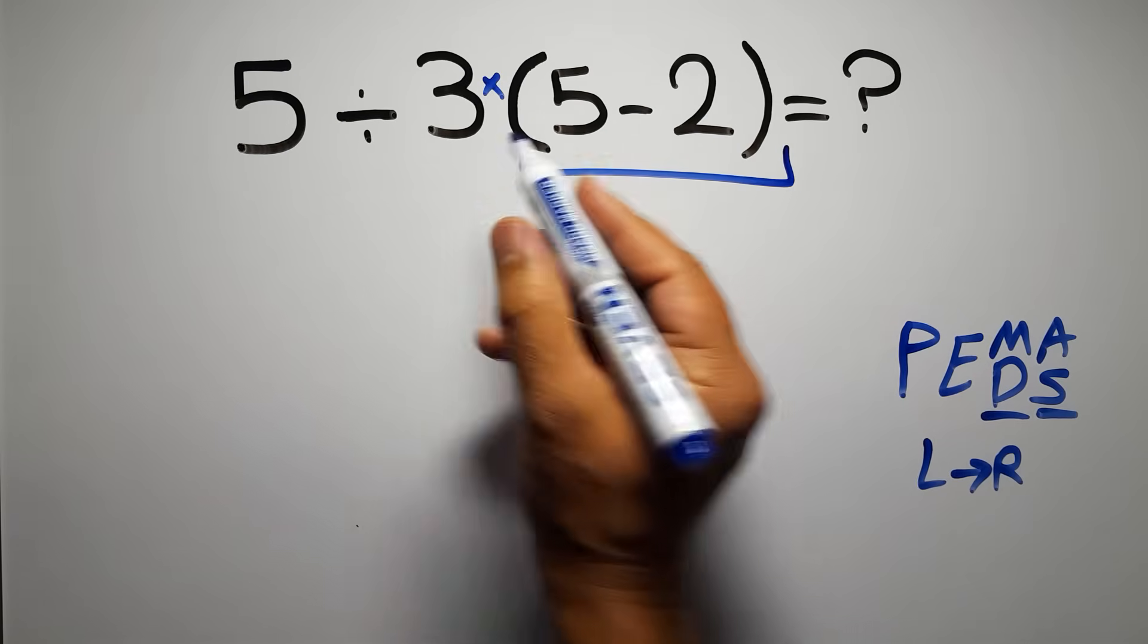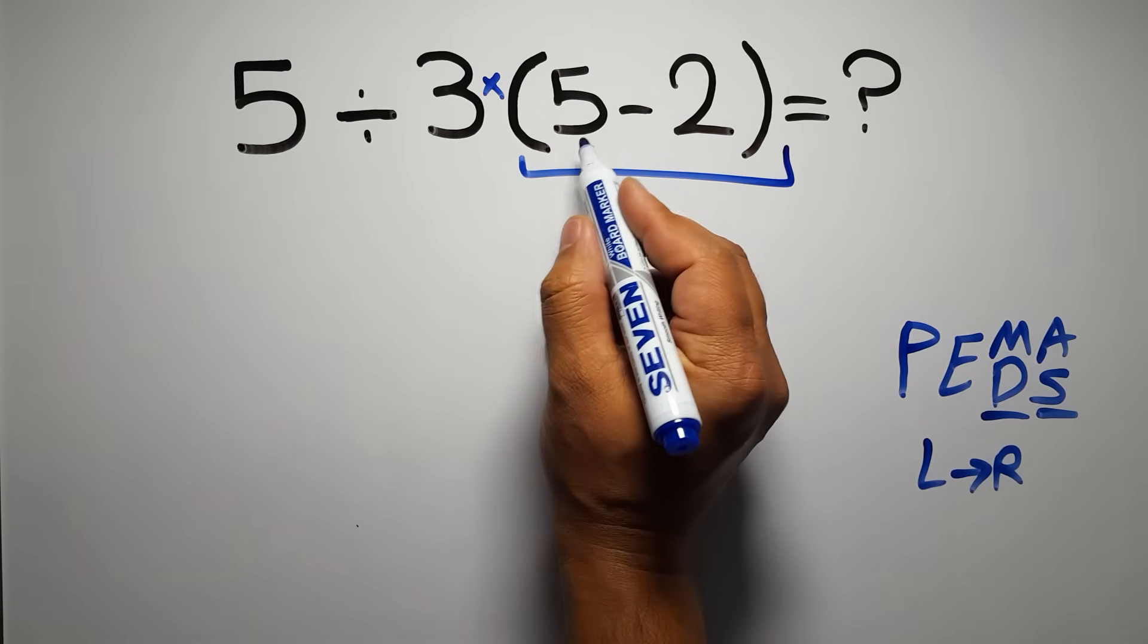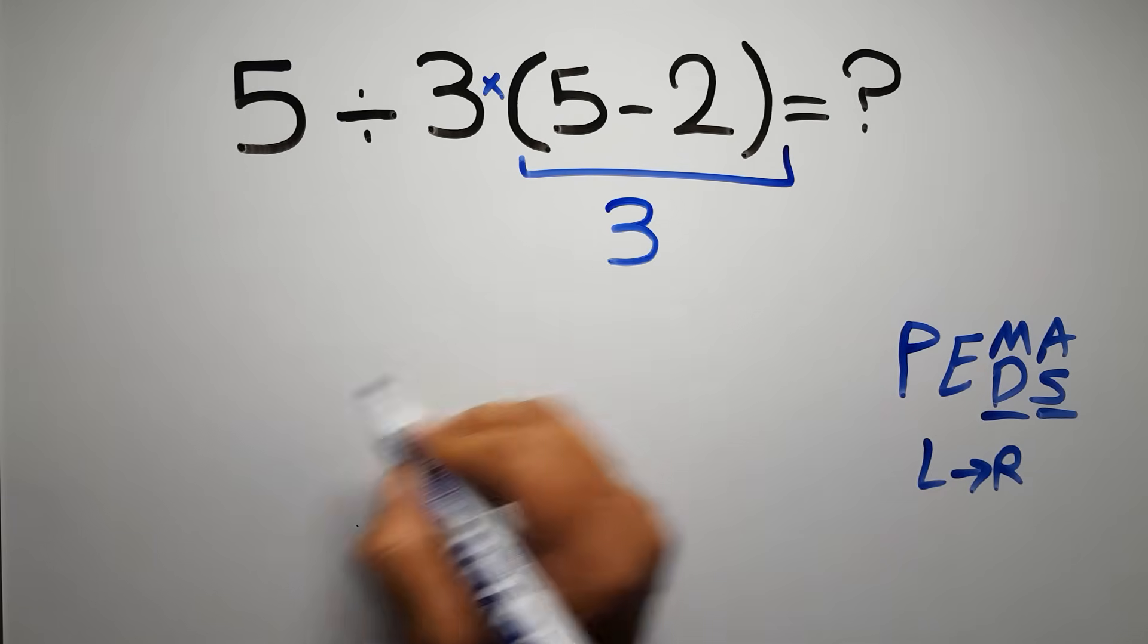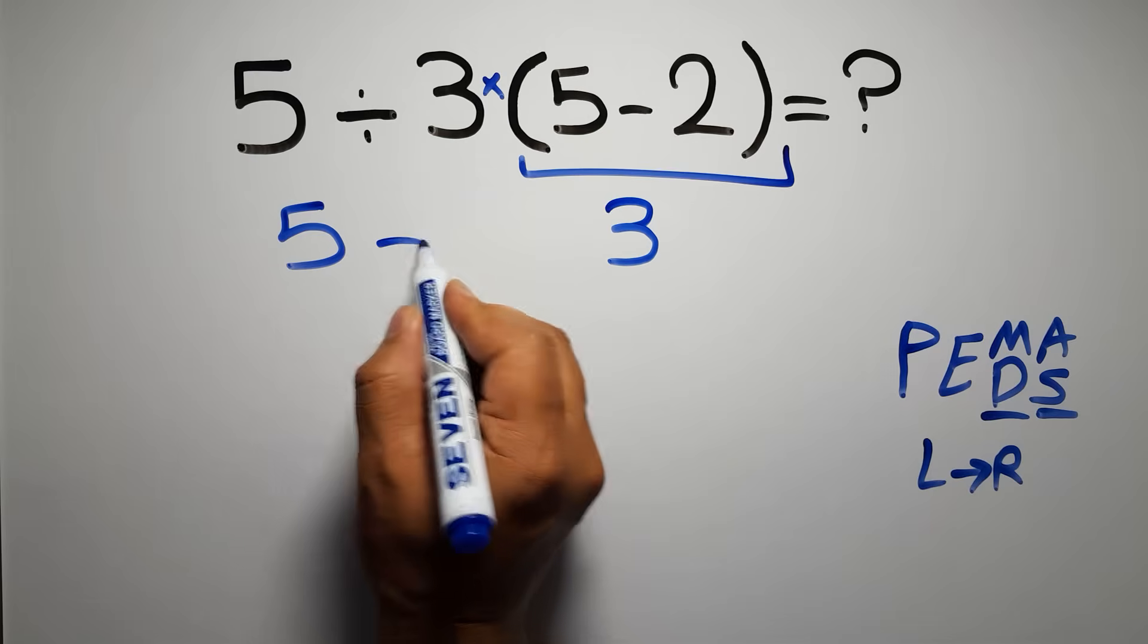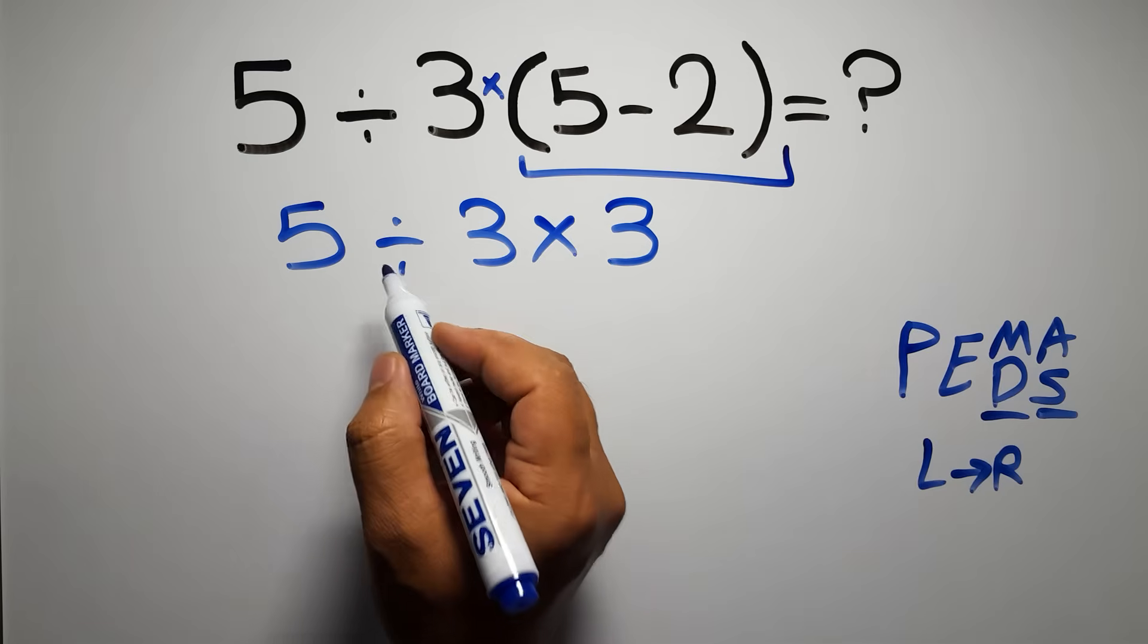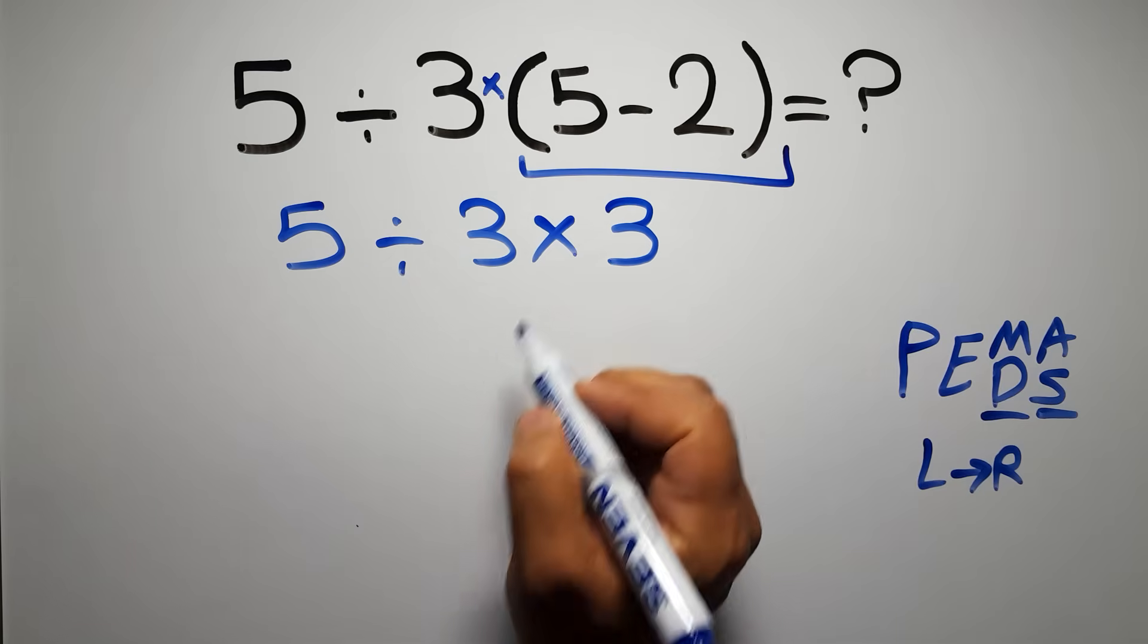So first, this parentheses. Inside this parentheses we have 5 minus 2, which equals 3. So 5 divided by 3 times 3. Now we have one division and one multiplication.